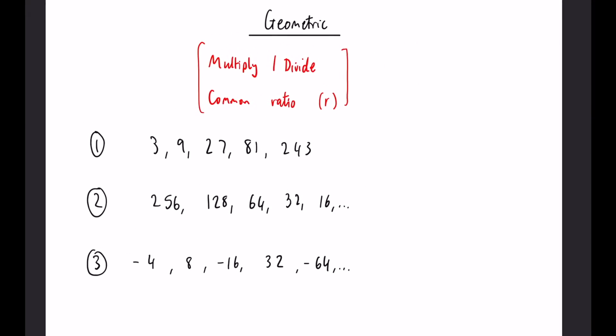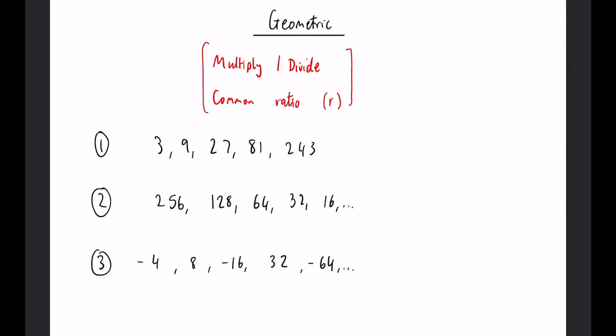Geometric sequences are very similar, but involve multiplying or dividing between terms instead. The main difference is we have something called the common ratio. We're going to work out the common ratio for each of these. All it is, is what is the difference between each term as you go through.